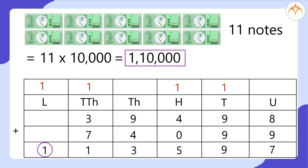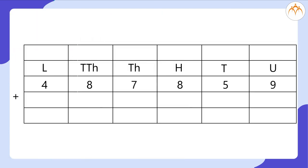Now let's try the addition of the population of 2 districts. Population of the 1st district is 4,87,859 plus population of the 2nd district is 3,64,632.